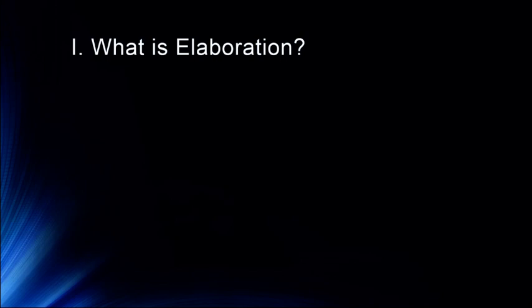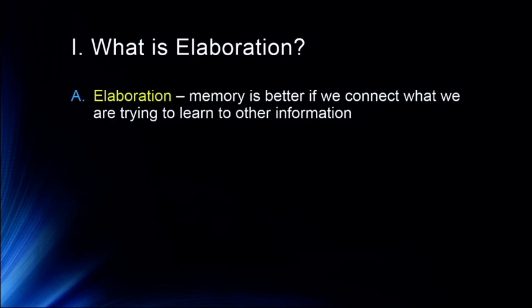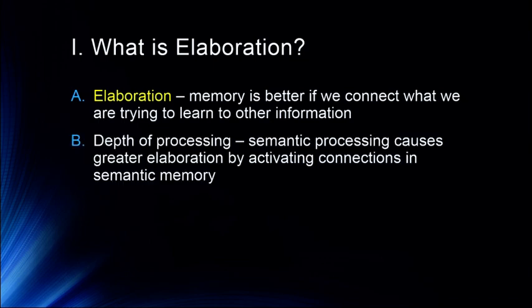Memory is better if we connect what we are trying to learn to other information, particularly other information that we already know. This is related to depth of processing. Semantic processing causes greater elaboration by activating connections in semantic memory. So if I ask you to think about whether an apple is a fruit, vegetable, or animal, you have to think about what an apple is — it grows on a tree, we think of it as a fruit, we distinguish it from a vegetable, and we know it's not an animal.